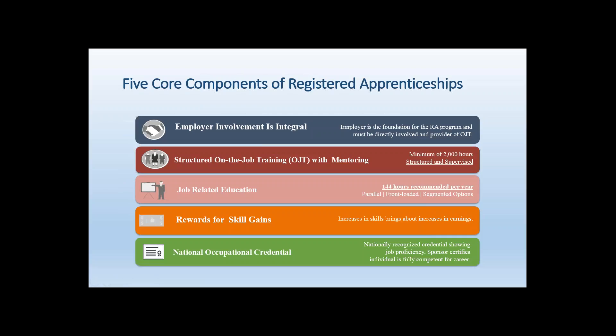This slide is provided by the Department of Labor and gives a good overview of the five core components of Registered Apprenticeship. At the foundational level, employer involvement is integral — you can't have a registered apprenticeship without an employer. This project is focused exclusively on manufacturers as the employers. Registered apprenticeships include structured on-the-job training with mentoring, coupled with job-related education and classroom training so that apprentices can apply their lessons on the job.